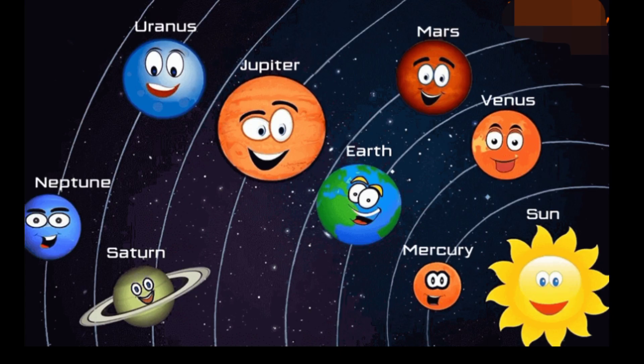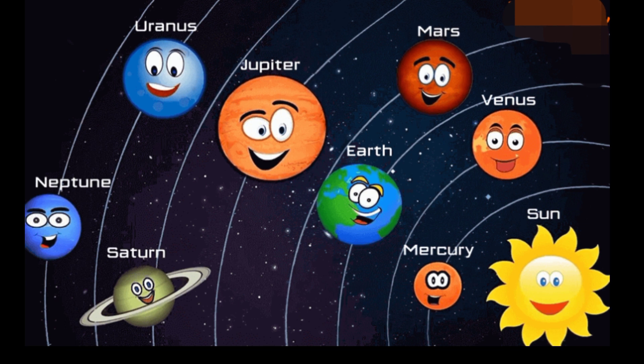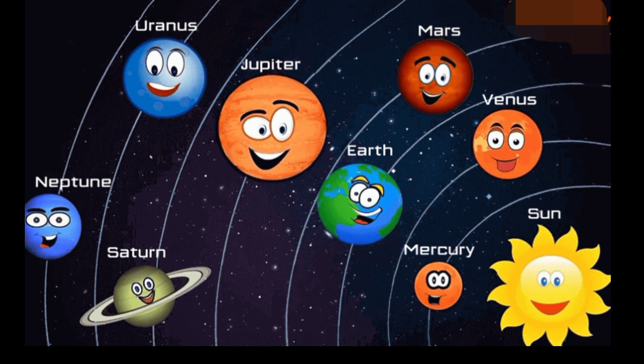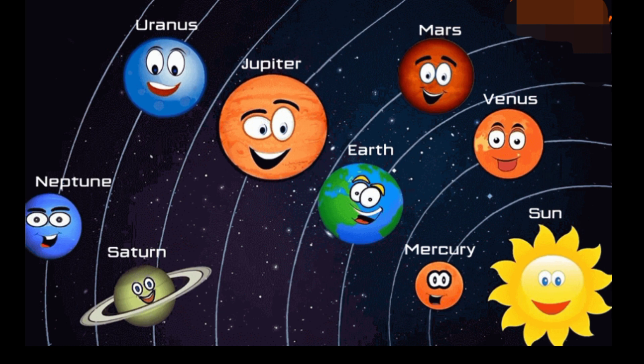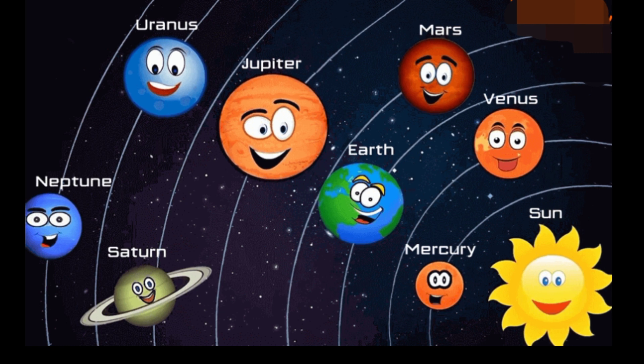Mercury, the smallest planet in our solar system and closest to the sun, is only slightly larger than Earth's moon. Mercury is the fastest planet, zipping around the sun every 88 Earth days.